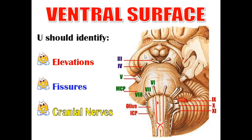This is the midbrain. This is the ventral aspect of the midbrain, which is the cerebral peduncle or crus cerebri. The oculomotor nerve exits from the interpeduncular fossa, medial to the crus cerebri. And the trochlear nerve comes from the back of the midbrain.